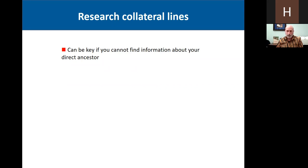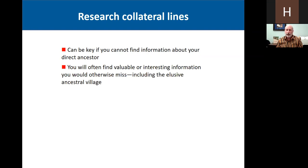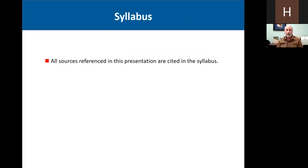Also, be sure you research those collateral lines — the siblings of your ancestor, the friends, associates, and neighbors — because often you will find valuable information by doing that. You also find valuable or interesting information you might otherwise miss, and that information about that elusive ancestral village might just be there. All the sources I reference in this presentation are cited in your handout.